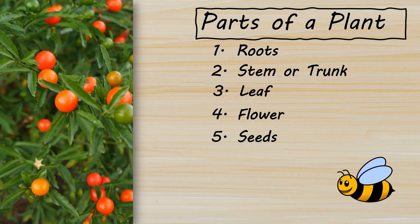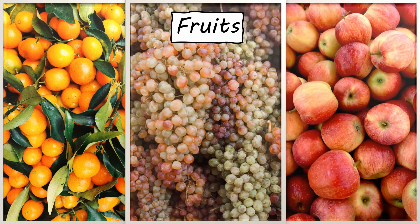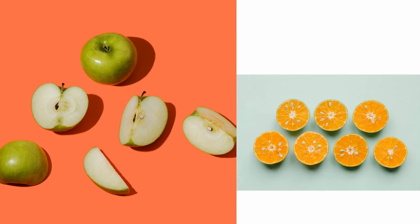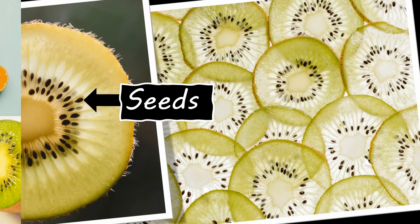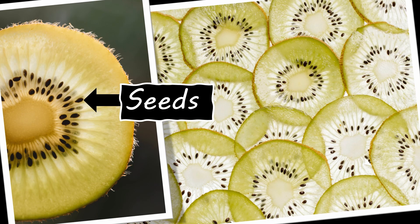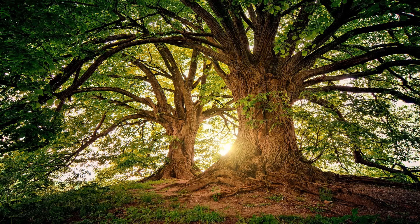Finally, some plants have fruits, just like this tomato plant. Fruits are like the plant's way of protecting the seeds. Inside fruits like apples, oranges, and kiwis, you can find seeds. When animals or people eat the fruit, they might accidentally spread the seeds, helping new plants grow. Every part of a plant has a job to do, to help the plant survive and grow. Together they make plants one of the coolest things in nature.